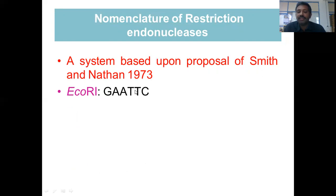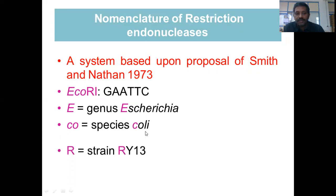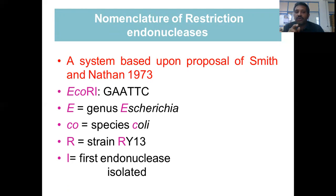For example, take EcoRI, whose restriction site is GAATTC. 'E' stands for genus — that is Escherichia. 'Co' stands for species — that is coli. 'R' stands for strain, and the Roman numeral 'I' stands for the first endonuclease isolated from that system — the order of discovery of restriction systems from that organism.